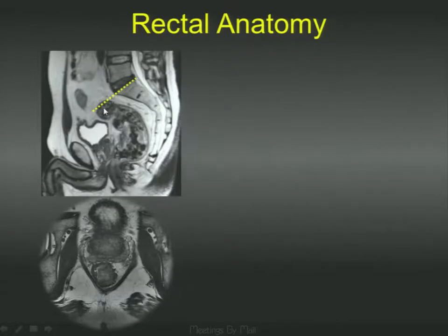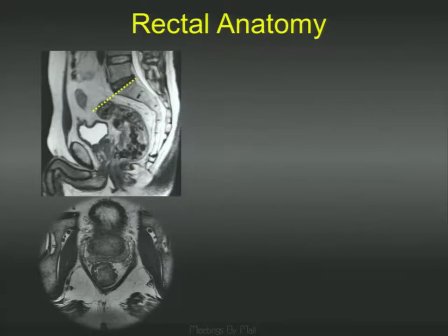You divide the rectum into thirds: the upper third, the middle third, and the lower third. It's very important that when you tell your technologist to image the rectum, they have to go proximally up to that level. Many times they will not, and then you'll end up missing important findings in tumors that can extend up to the upper rectum.